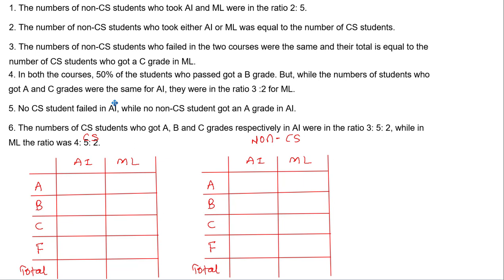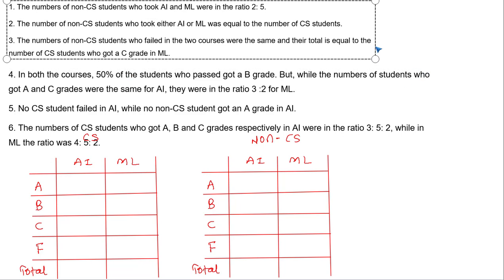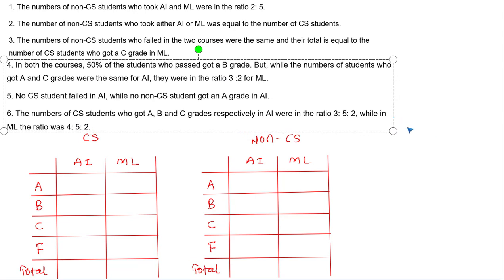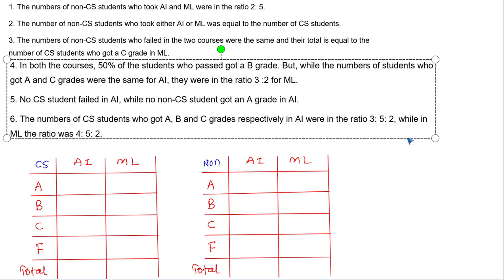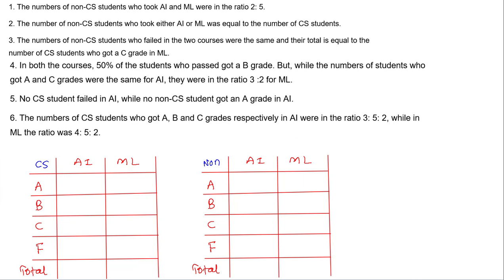The most direct statement is statement number 6. The number of CS students who got A, B, and C grades in AI are in a ratio 3:5:2, so let's take 3x, 5x, and 2x. In ML the ratio is 4:5:2, that is 4y, 5y, and 2y. So we are done with statement number 6.